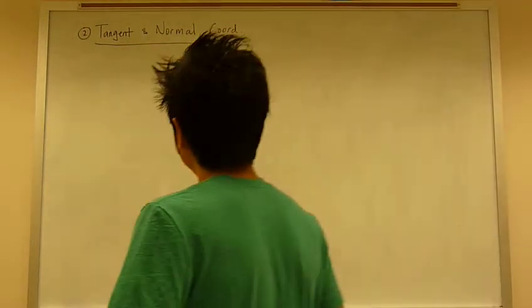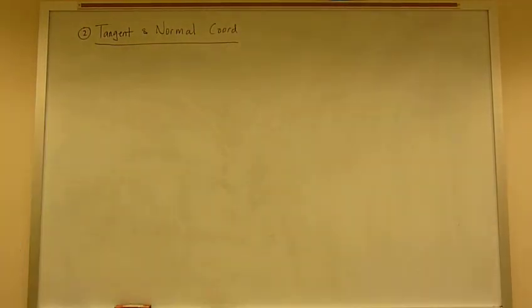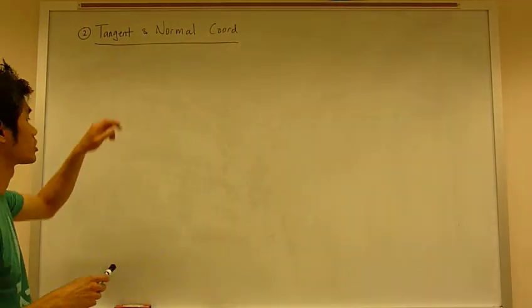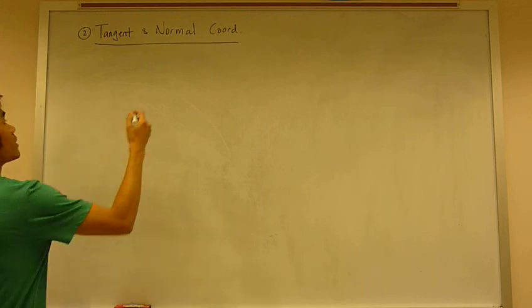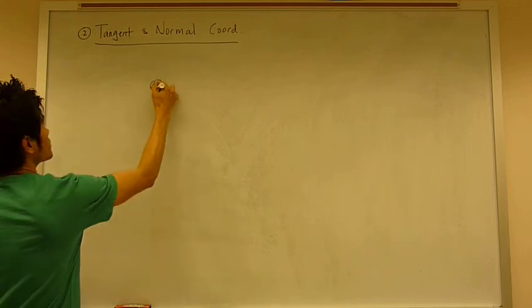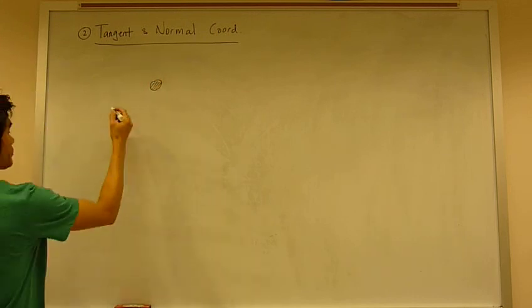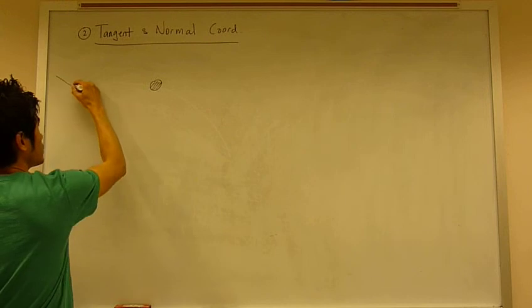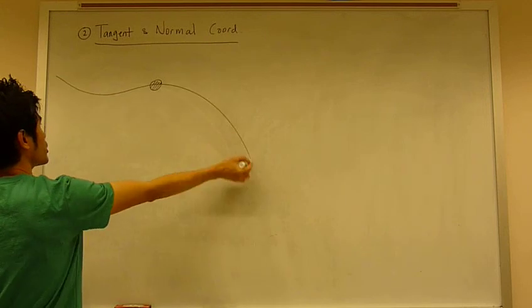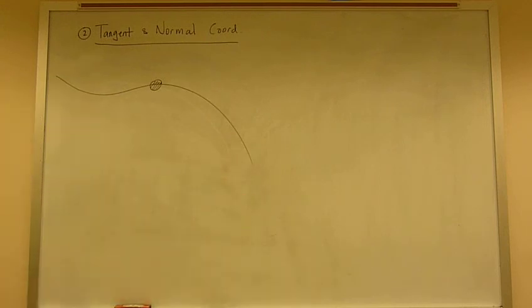The second type of coordinate system that we can use to analyze curvilinear motion is called tangent normal coordinate system. And it looks something like this. This is my particle, and a particle can be traveling along a curved path, a rounded curved path.